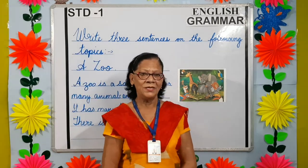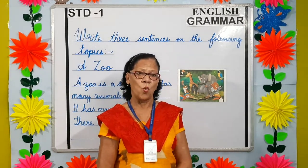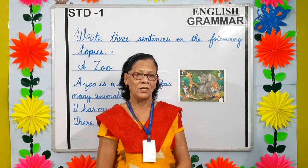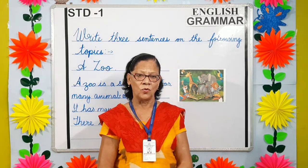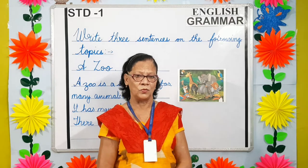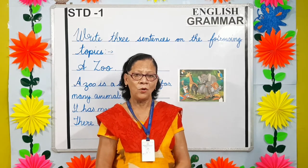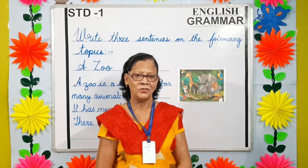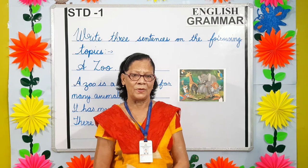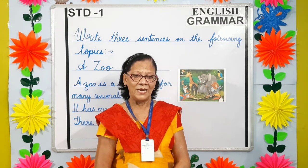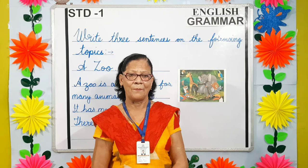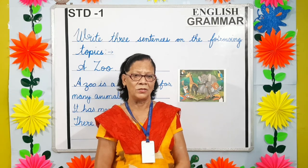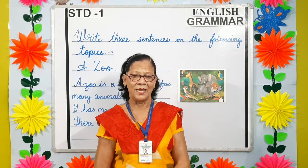Now students, let us recapitulate what we have learned today. We learned about a parrot, a crow, a crocodile, and a zoo. I hope you all have understood these topics properly. Related to these topics, the worksheets will be uploaded on the school website. Thank you and have a nice day.